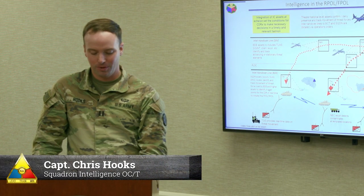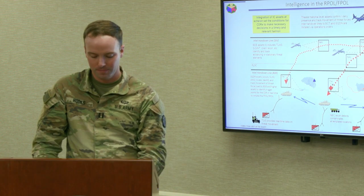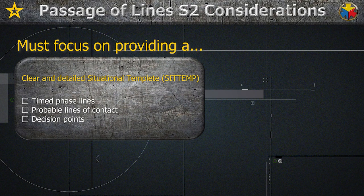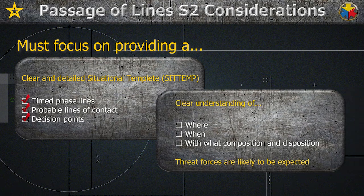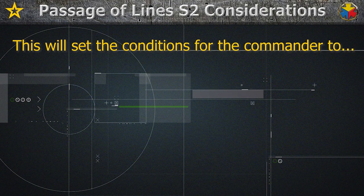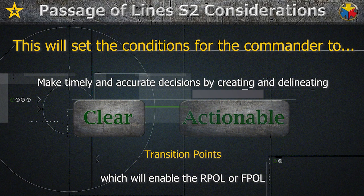During FPOL and RPOL operations, intelligence and specifically information collection plays a critical role. Intelligence professionals must focus on providing a clear and detailed situation template with an emphasis on time phase lines, probable lines of contact, and decision points in order to provide commanders and staffs at echelon with a clear understanding of where, when, and with what composition and disposition threat forces are likely to be expected. This will set the conditions for the commander to make timely and accurate decisions by creating and delineating clear and actionable transition points which will enable the RPOL or FPOL.